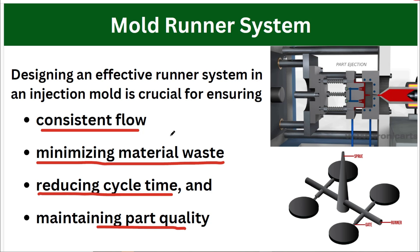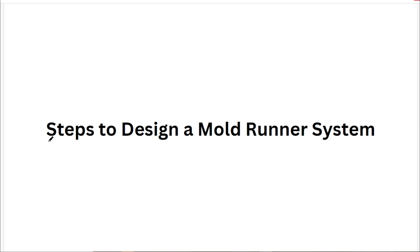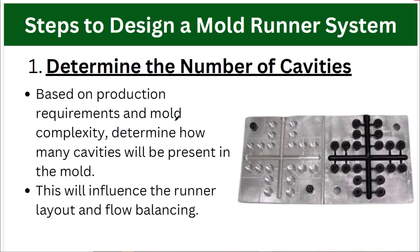There are two types of runner systems — cold and hot runner systems. In a cold runner system there is wastage of material because the runner and gate are ejected with the part and then trimmed, becoming scrap. The first step to design the mold runner system is to determine the number of cavities — whether it is a single mold, a multi-cavity mold, or a family mold. Based on the number of cavities we will design the runner pattern.